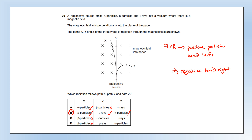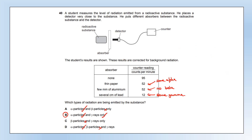A student measures radiation from a radioactive substance using different absorbers. Results are corrected for background radiation. With no absorber: 95 counts per minute. Adding paper: count rate drops significantly — some alpha radiation is present. Replacing paper with aluminium: count rate doesn't change — so there is no beta radiation (beta would have been stopped by aluminium). Adding lead: count rate drops — so there is some gamma. Alpha and gamma present, no beta — that's option B. That completes the paper.